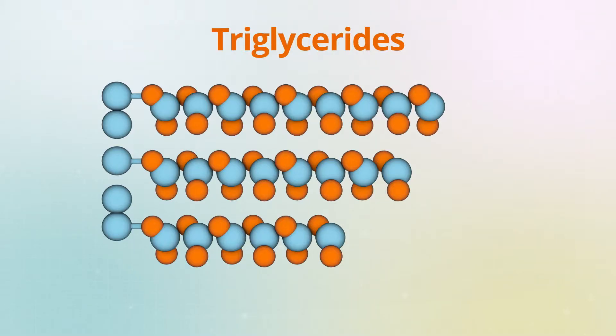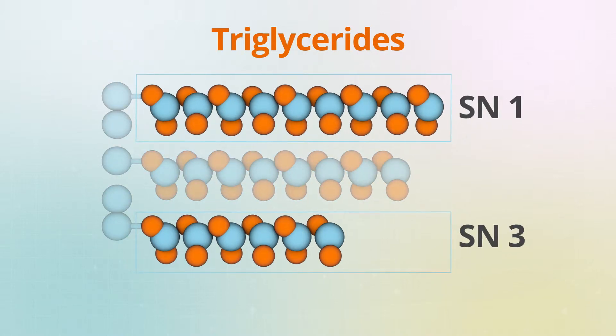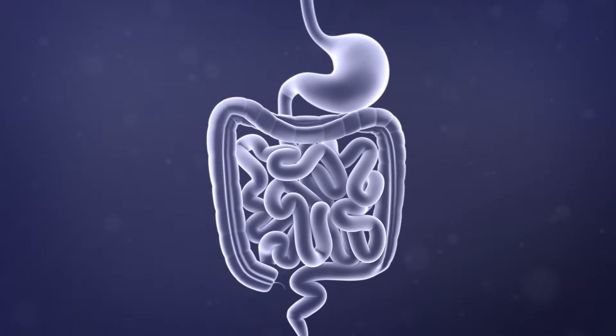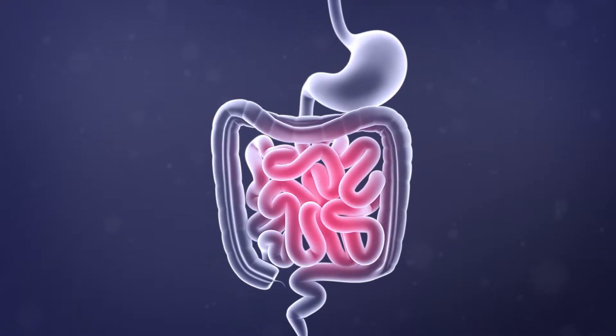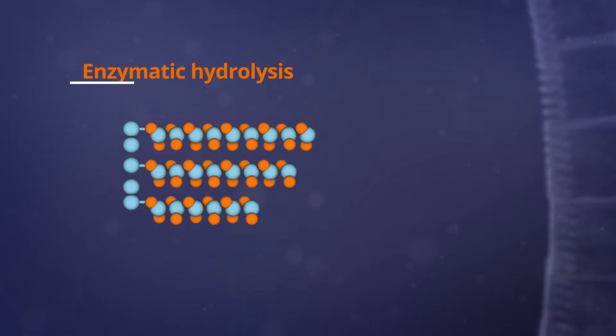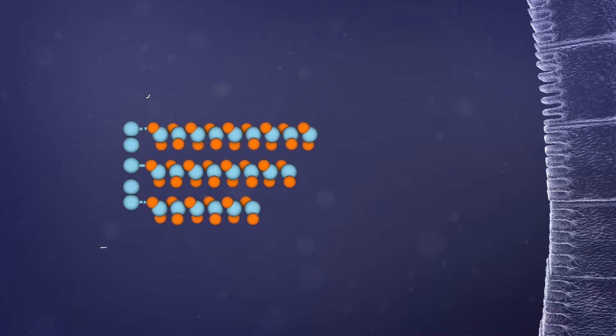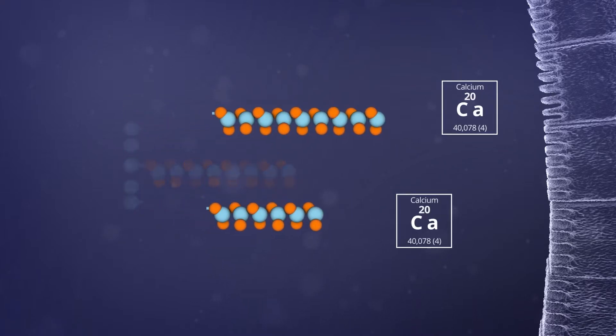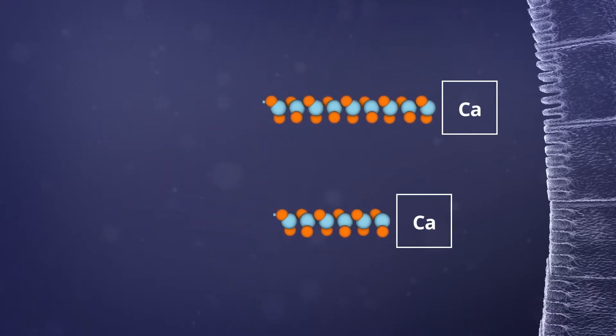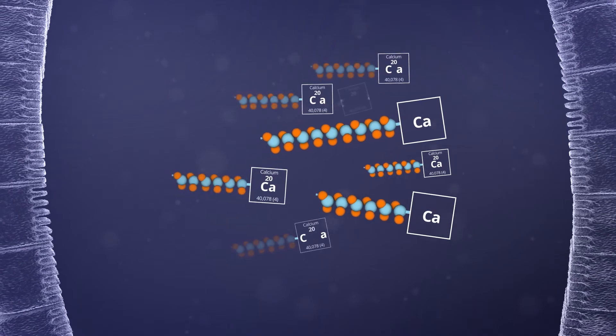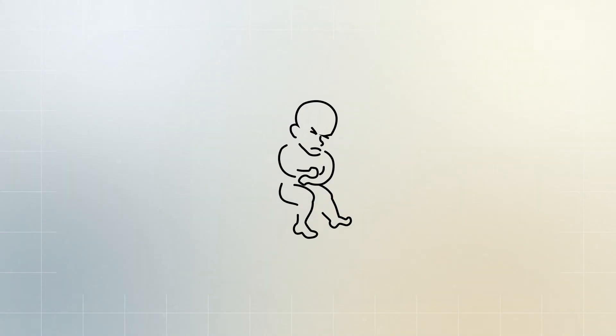In contrast, palmitic acid in the external position, SN1 and SN3, does not confer the same properties and can have significant consequences on infant gastrointestinal health. Indeed, enzymatic hydrolysis and release of palmitic acid from the SN1 and SN3 positions leads to free palmitic acid binding to calcium, thus preventing their intestinal absorption. This process causes a saponification effect, leading to intestinal discomfort.